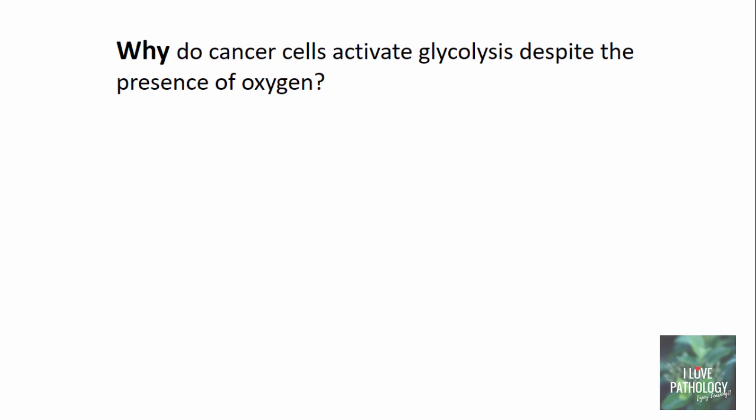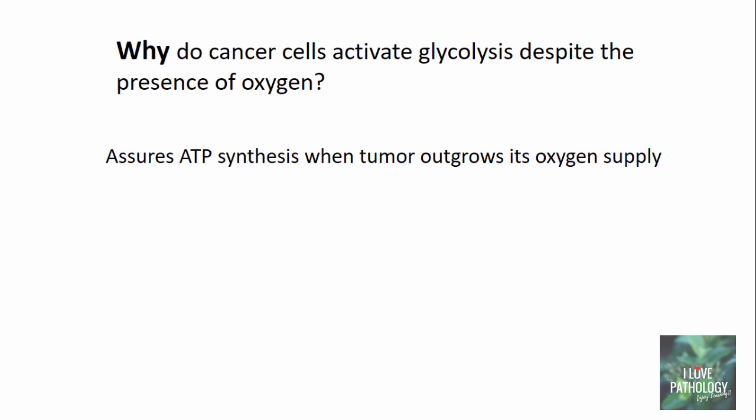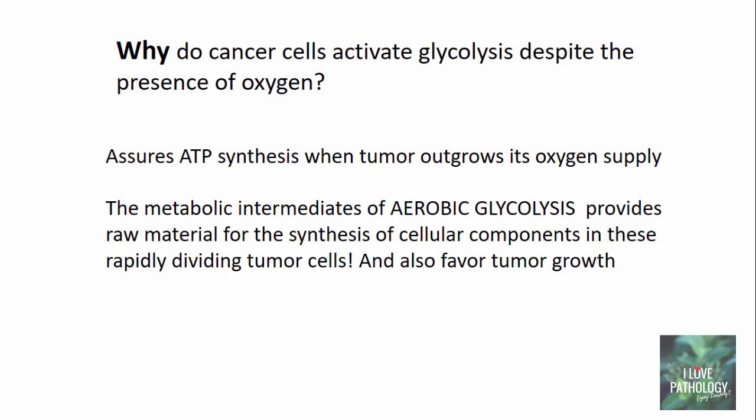The second question: why do cancer cells activate glycolysis despite the presence of oxygen? In a growing tumor, there is always a probability that the tumor outgrows its oxygen supply, so aerobic glycolysis assures ATP synthesis when that happens. Additionally, the metabolic intermediates of aerobic glycolysis provide raw material for synthesis of cellular components of these rapidly dividing tumor cells. For the cell to grow, it has to duplicate all its components — not just DNA — so it needs carbon moieties as building blocks. In oxidative phosphorylation, only abundant ATP is produced but no carbon moieties, whereas in aerobic glycolysis, only a few ATP are produced and the rest of the glucose is utilized to produce intermediates that build these blocks.